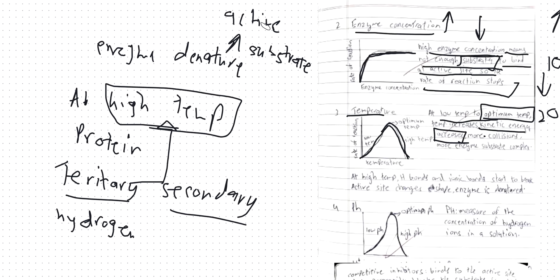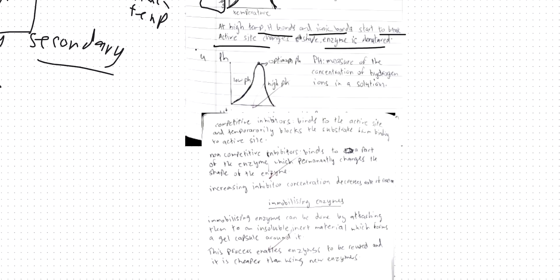At high temperatures, hydrogen bonds and ionic bonds start to break, so the active site changes shape and the enzyme becomes denatured. The fourth thing which affects enzyme activity is pH.